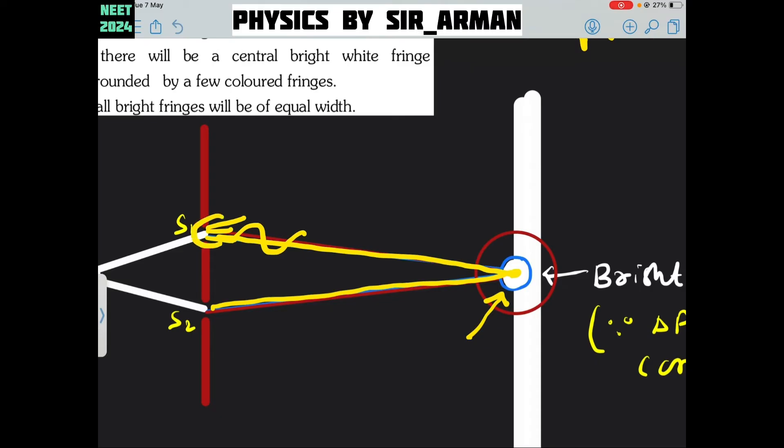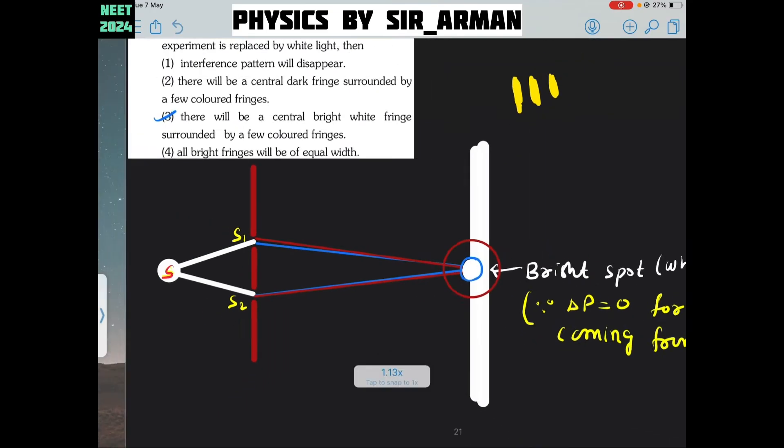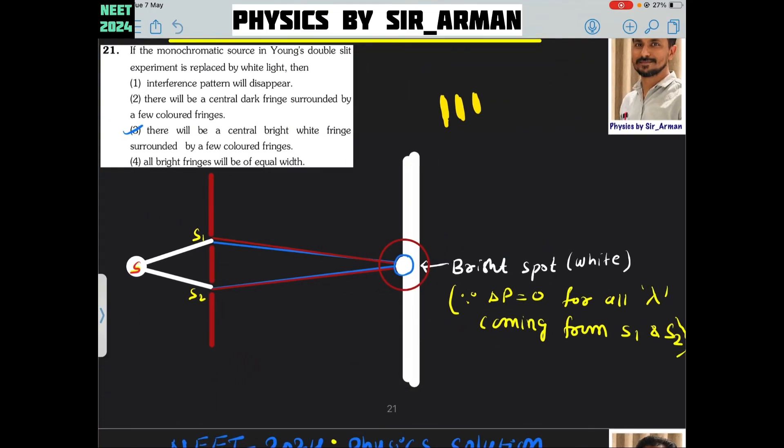But suppose a light which is coming from this point reaches here and a light coming from this point reaches here. So, there will be a path difference. As there is no path difference between any wavelength at the central point, hence there will be a very bright spot. There will be a central bright spot. But what about the other part? The other part will be surrounded by colored fringes.